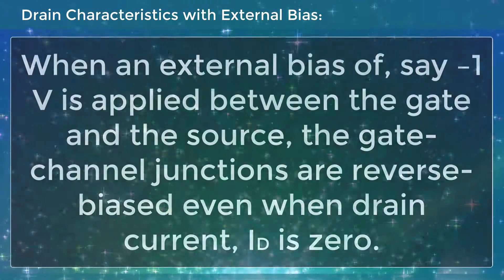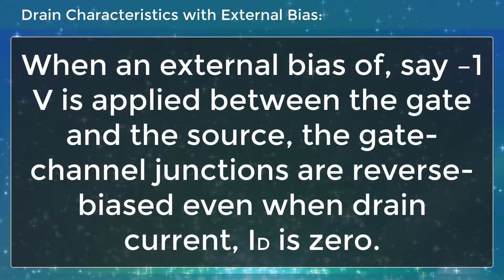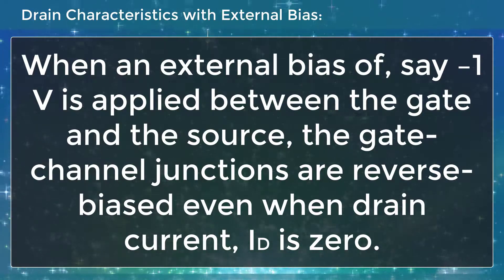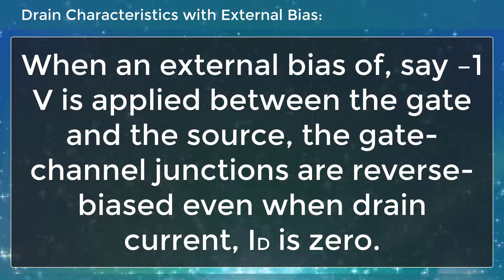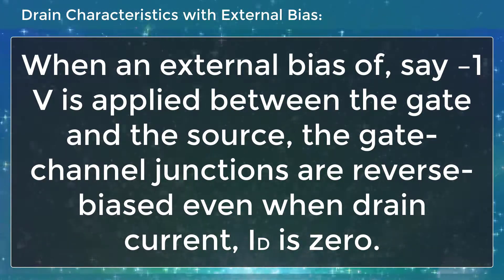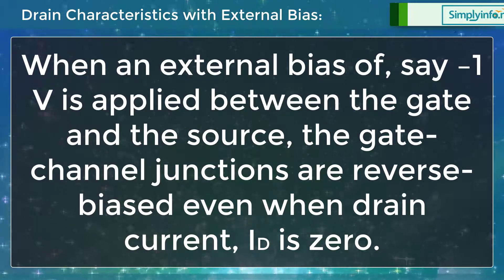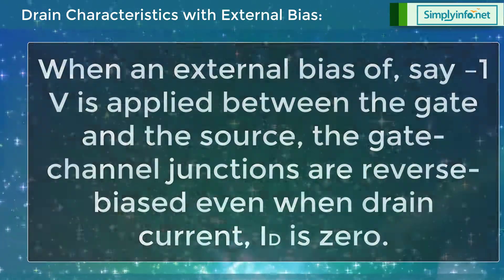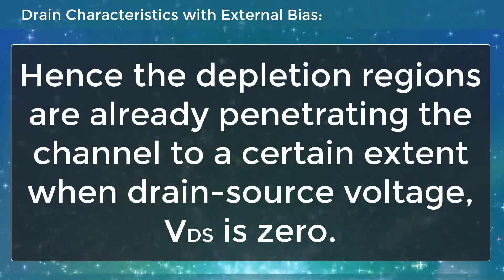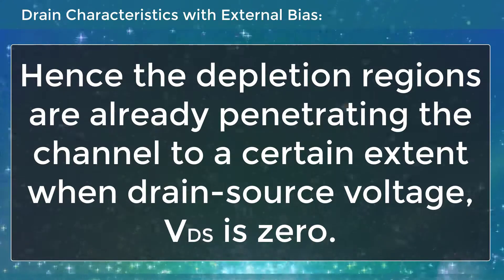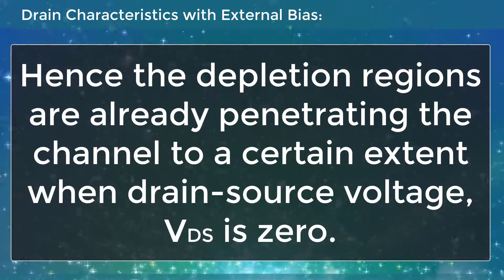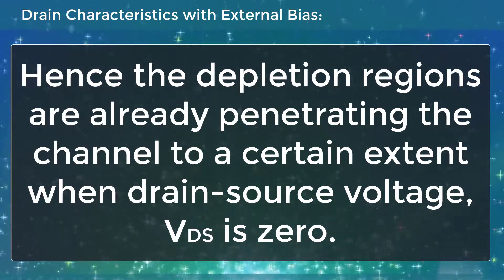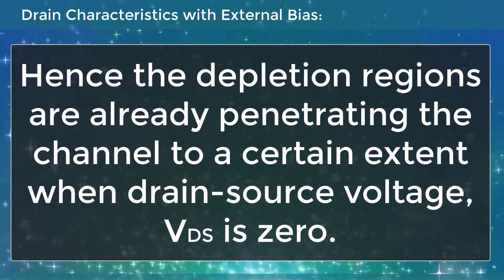When an external bias of, say, minus 1 volt is applied between the gate and the source, the gate-channel junctions are reverse biased even when drain current ID is 0. Hence, the depletion regions are already penetrating the channel to a certain extent when drain-source voltage VDS is 0.